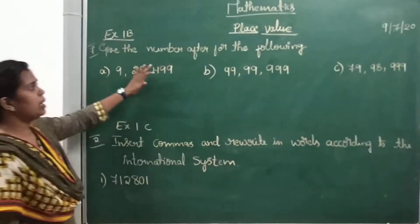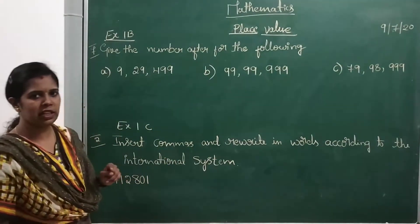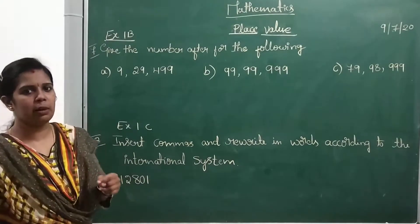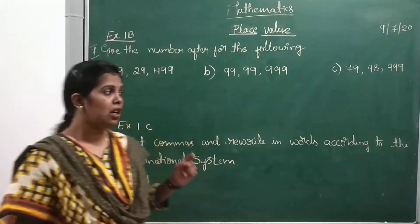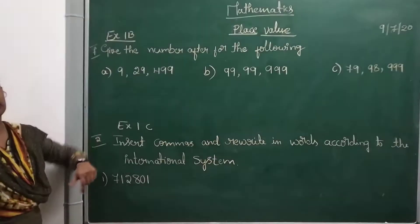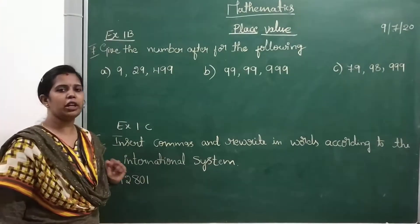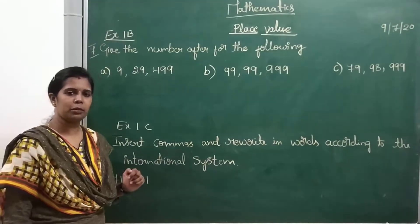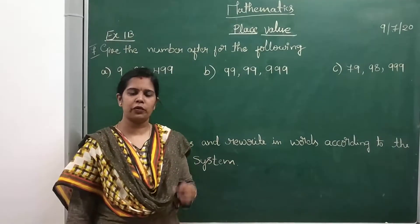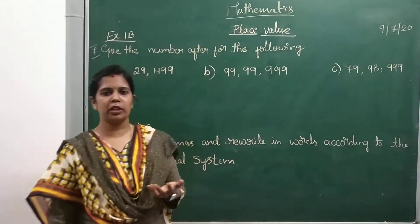So, give the number after for the following. In the last class we wrote the 'before' number for given numbers. Today in this class we are going to write the 'after' number for the given numbers. From pre-KG and LKG we are learning after, before, and given numbers. So how do we write the after number?